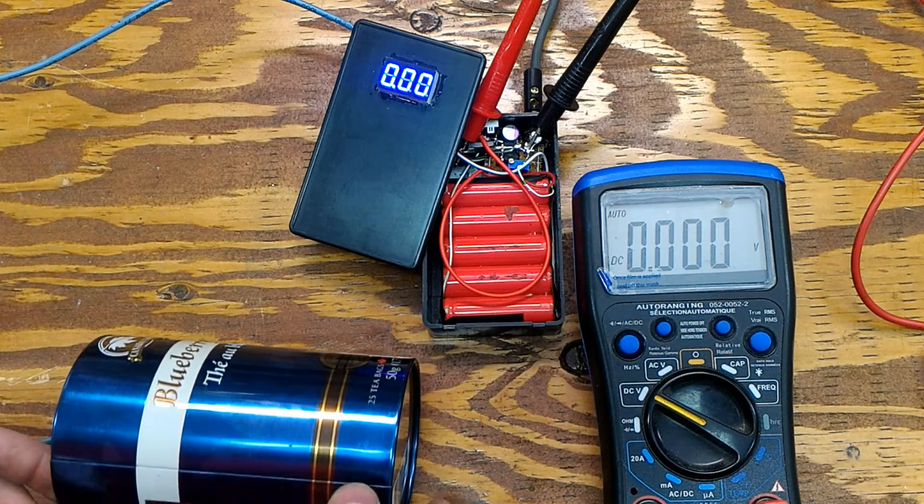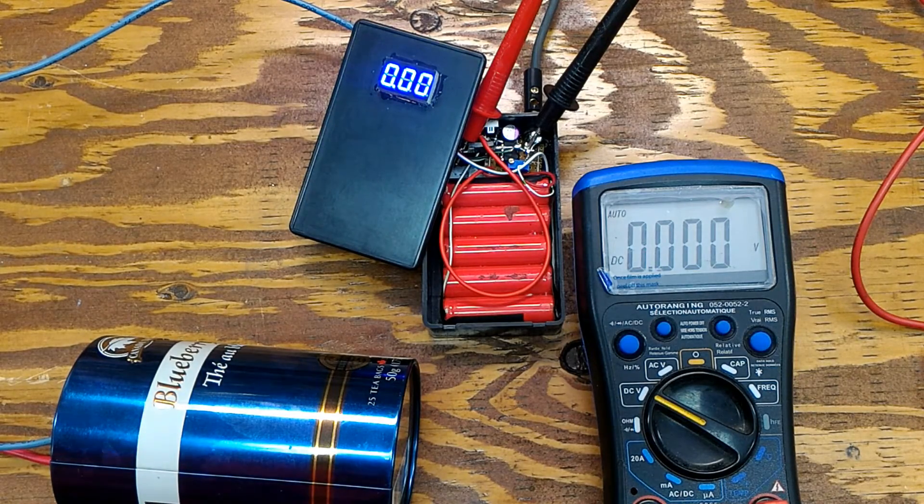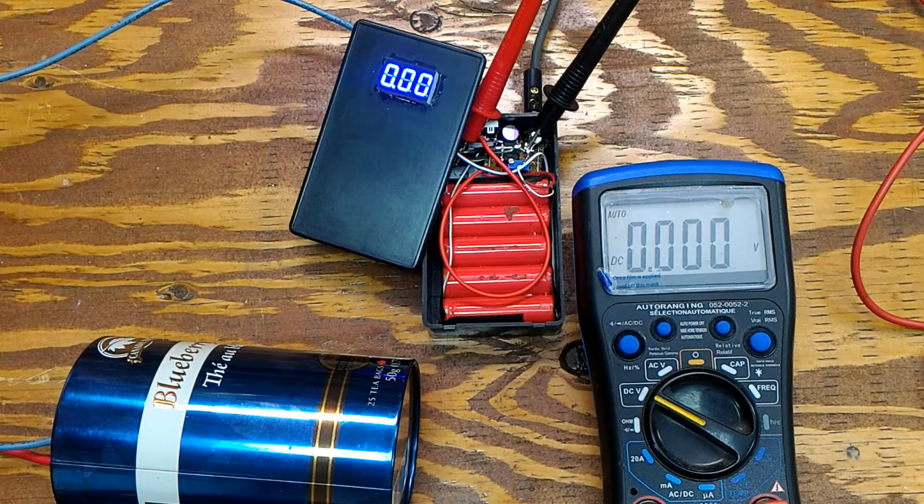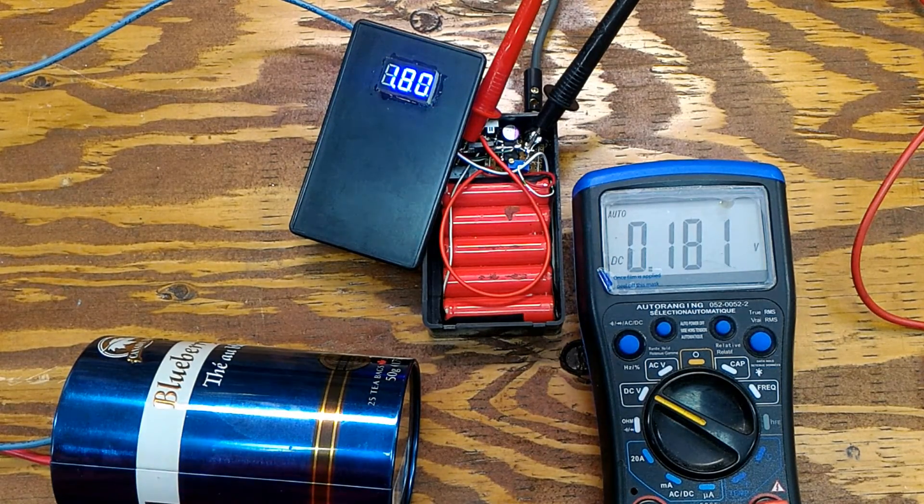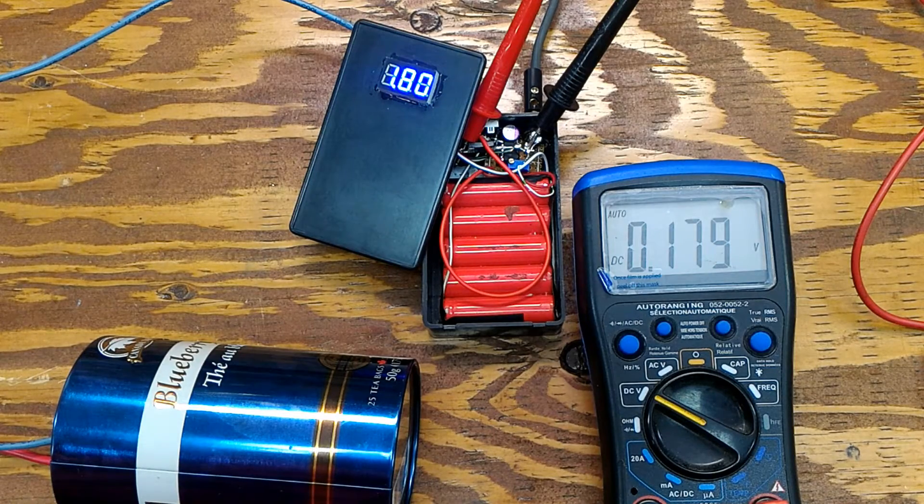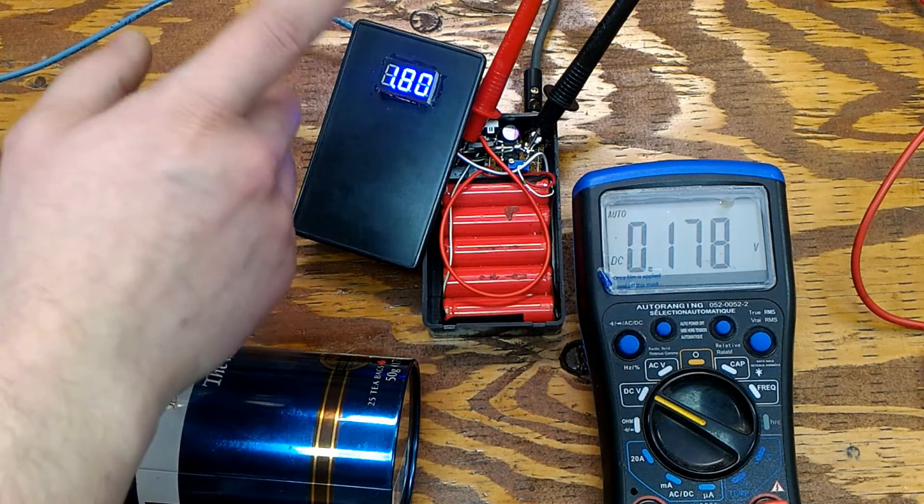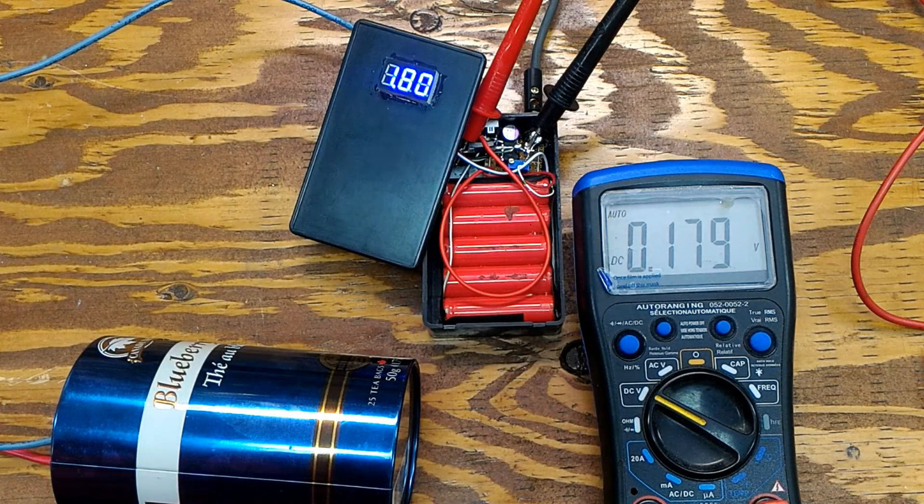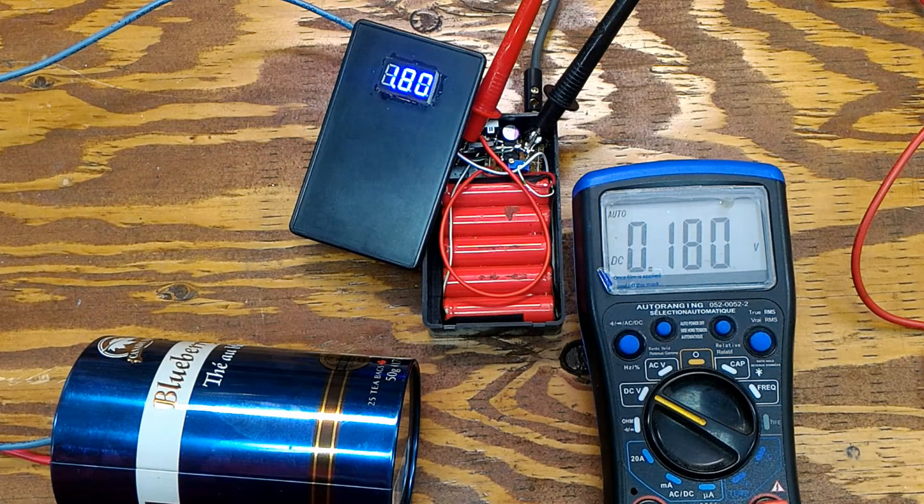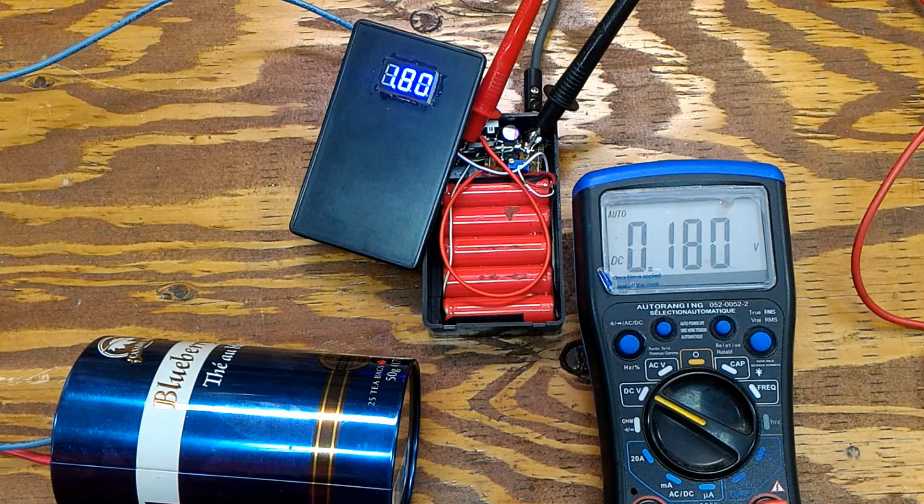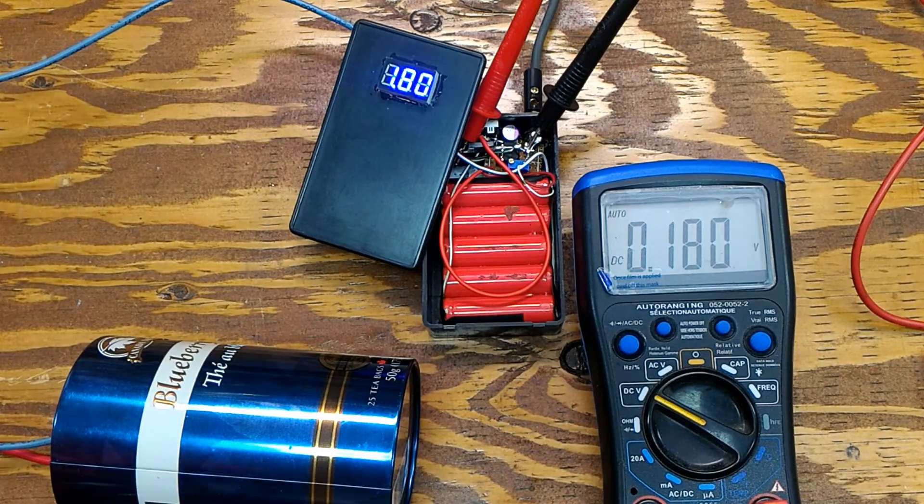So first we're going to apply 3.3 volts to the bulb, three, two, one. So now we are applying 3.3 volts to the bulb and as you can see the numbers are almost exactly the same. And this is very exciting because this is a homemade meter and it's performing really well.